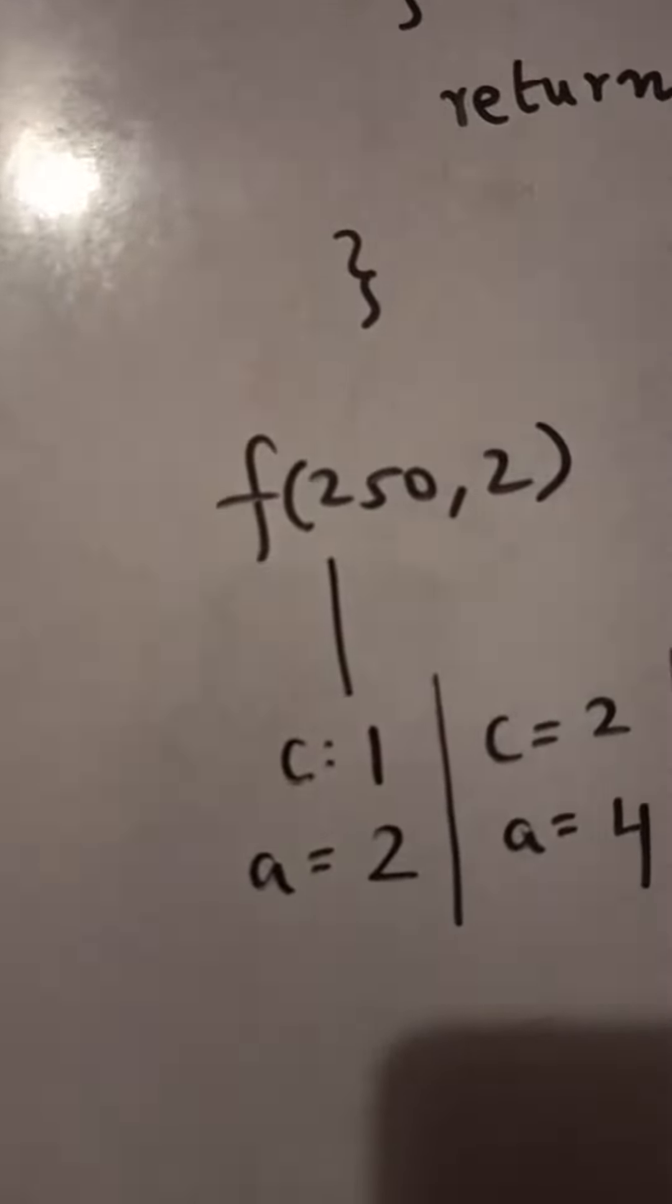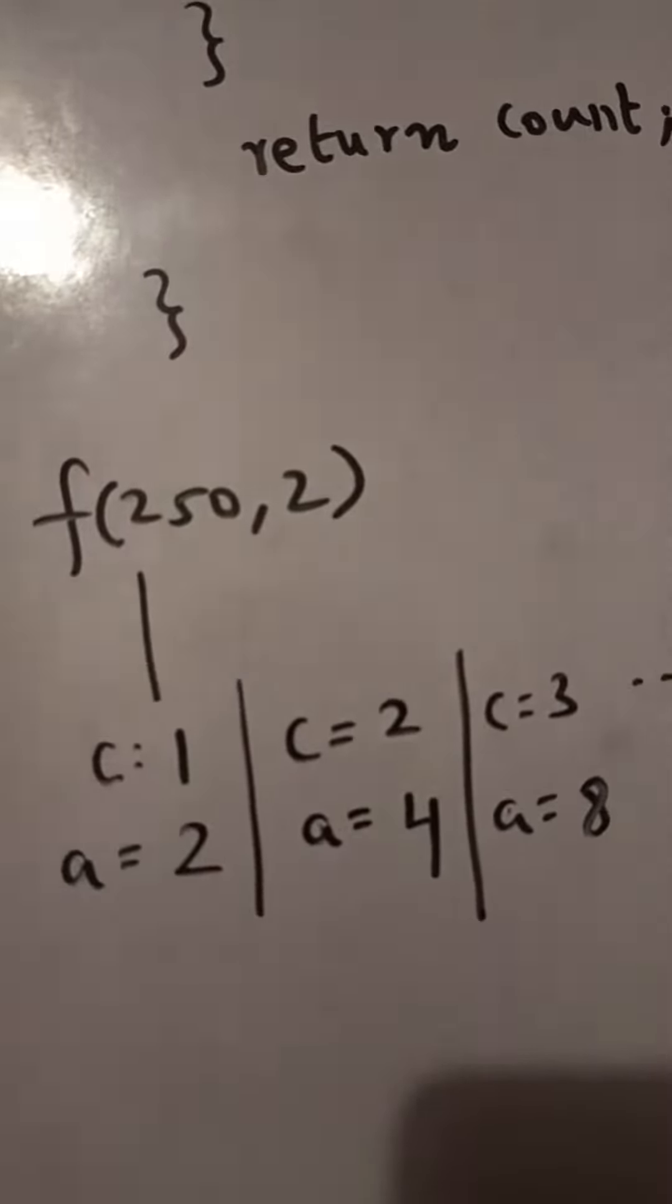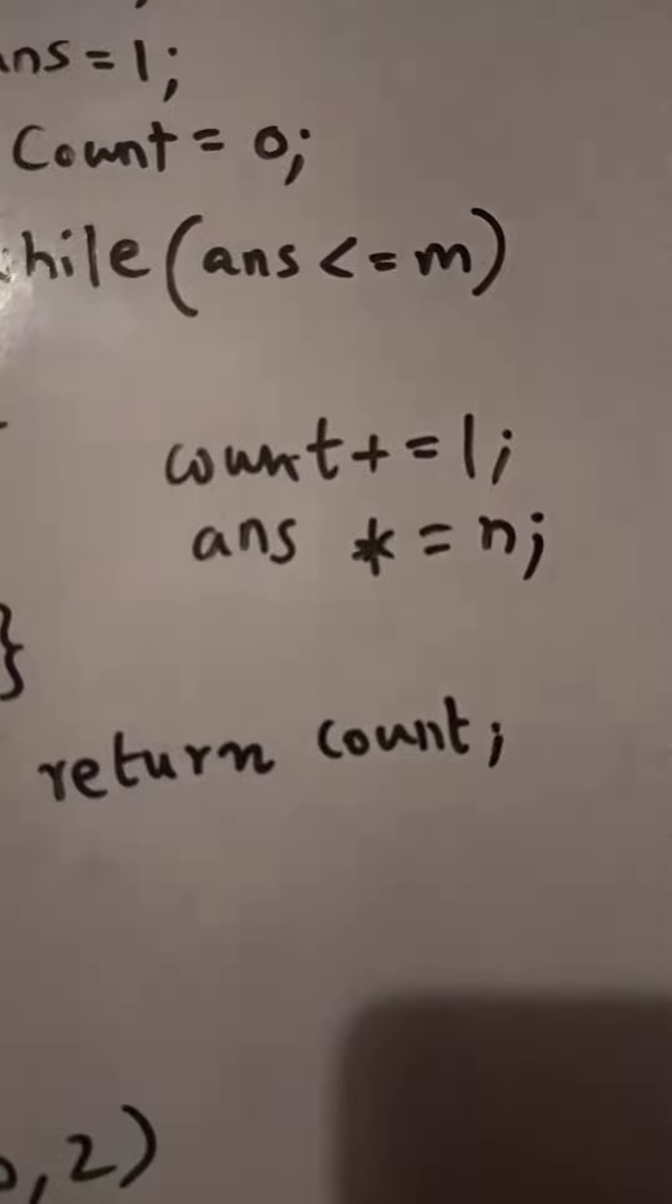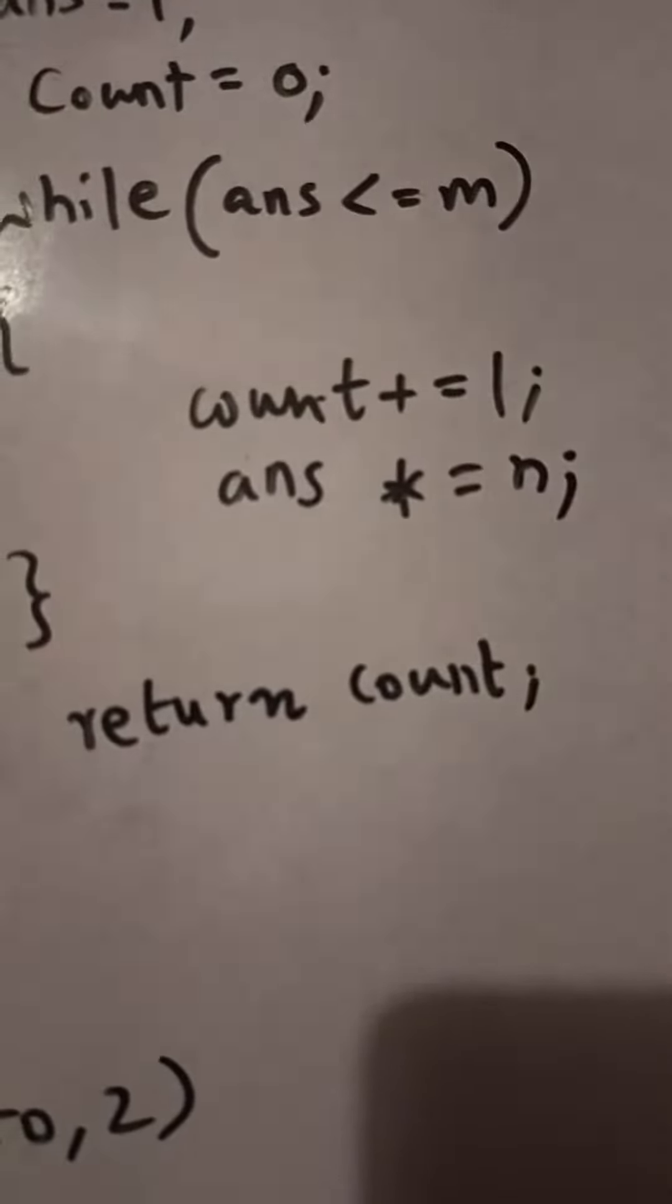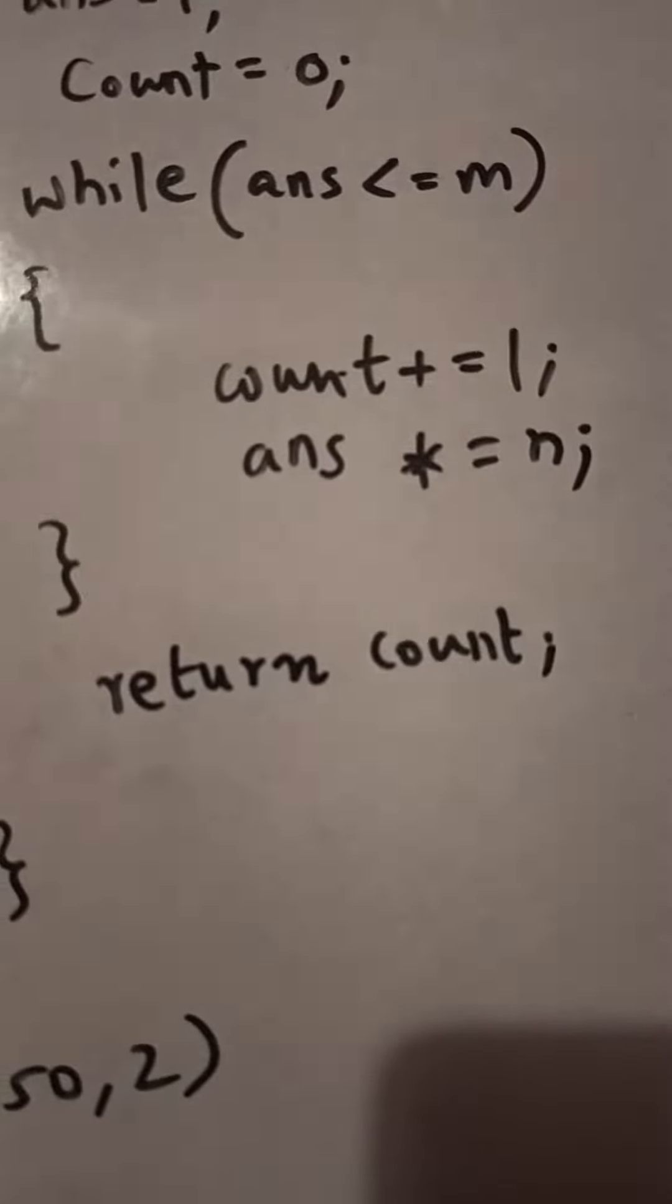At the next iteration of the while loop, count will be incremented by 1 so it will be 2, and answer was initially 2 in the previous stage and now it will again be multiplied by 2.